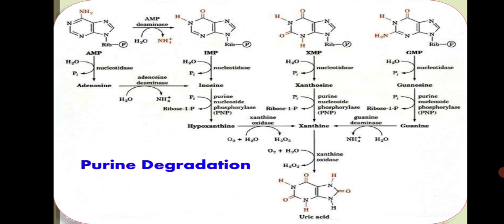Adenosine is not degraded directly by the enzyme; it has to be converted to inosine first. Guanine undergoes deamination by guanase to form xanthine. Xanthine oxidase then converts hypoxanthine to xanthine, and xanthine to uric acid. Uric acid is the final product of purine metabolism and is found exclusively in the liver and small intestine. Xanthine oxidase also liberates H2O2, which is harmful to tissue, and the catalase enzyme cleaves H2O2 to H2O and O2.